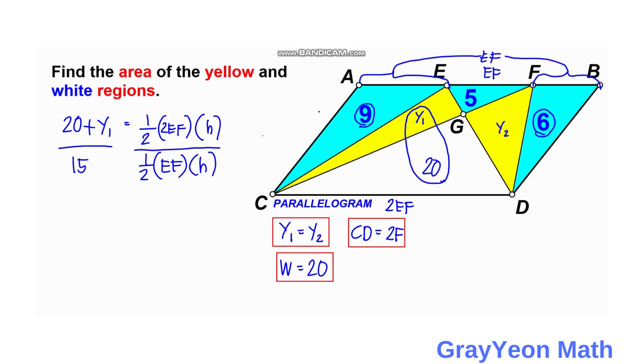We can actually cancel this H, EF, one half, and this one half, and we have 20 plus Y1 is equal to 15 times 2, and this becomes 30. So Y1 is equal to 30 minus 20, or Y1 is equal to 10 square units.